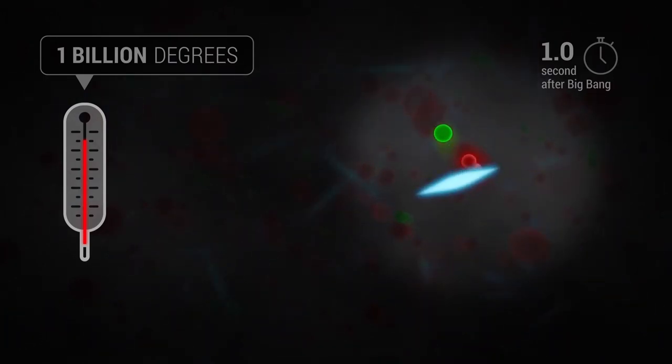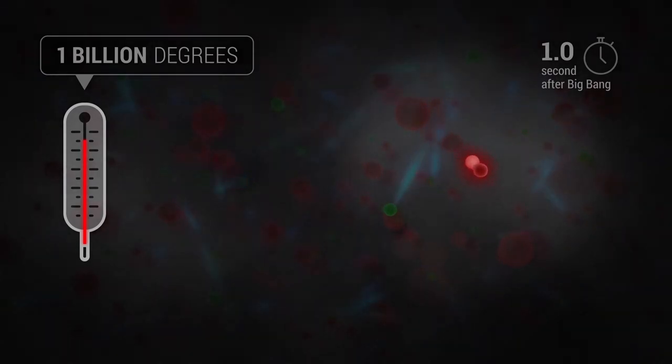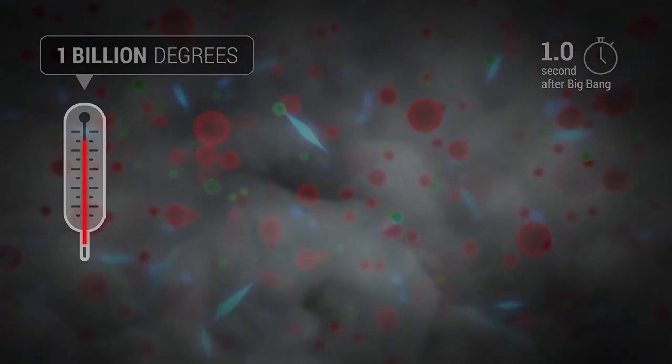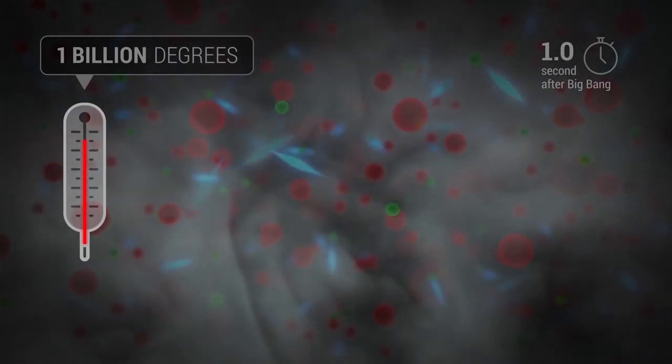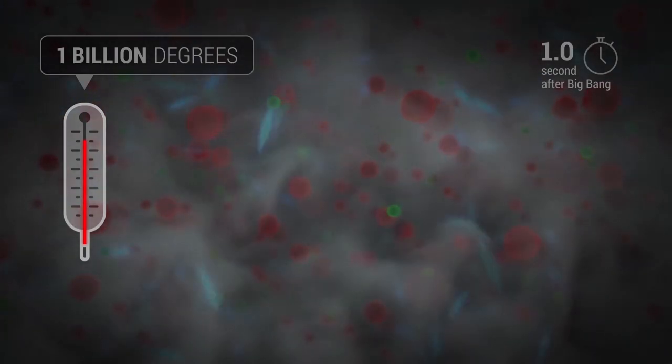Meanwhile, the photons couldn't go very far without crashing into electrons and newly formed nuclei. The photons bounced around like sunlight does in a dense fog. Because all the light was scattered around, the entire universe was foggy.